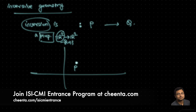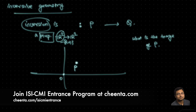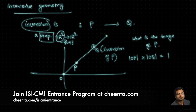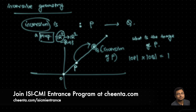I'll explain what inversion is quickly. Here is a prescription for finding the image of P: you mark the origin, you join OP, you extend it, and you find a point Q such that the length of OP times the length of OQ equals 1. Then we say Q is the inversion of P — Q is the image of P. For the point P, I calculated the length of OP, extended the segment OP to a ray, and found another point Q such that this product equals 1.